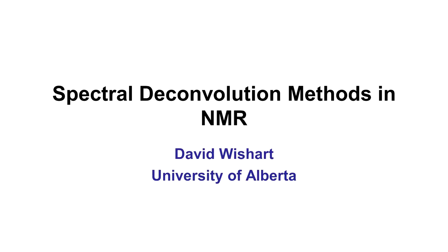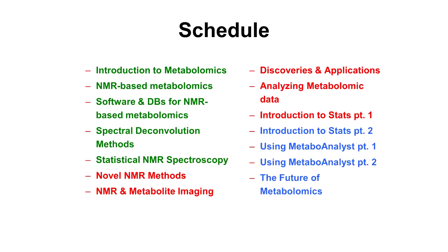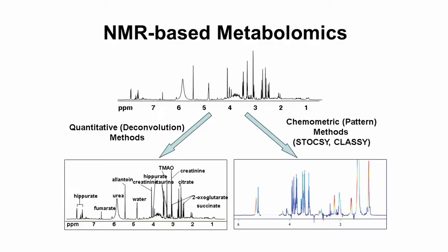Welcome to part four of our series on NMR-based metabolomics. I'm going to be talking about spectral deconvolution methods in NMR. This is something we've been leading up to for a while. The last lecture was an introduction to software and databases associated with NMR-based metabolomics. This lecture focuses on targeted slash spectral deconvolution, and the lecture later today will be on the statistical spectroscopy or chemometric approach. It's partly for you to compare and contrast, and I'll highlight some things I like or dislike about the different methods.